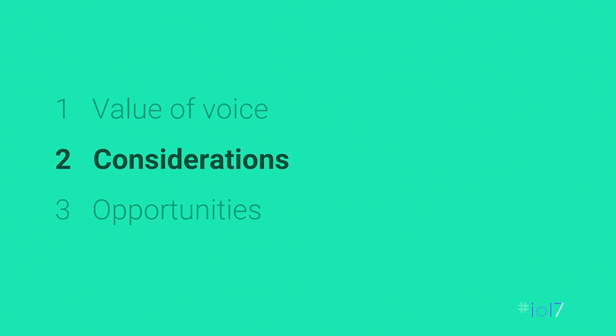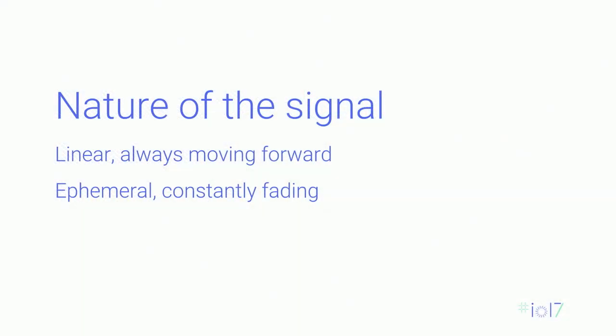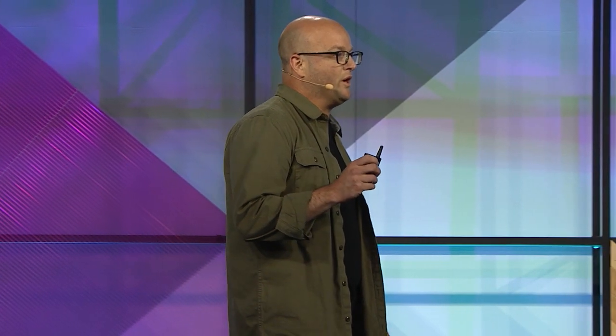Now let's talk through some considerations. The first thing I want to talk about is the nature of the signal. Voice is linear and it's always moving forward. It's ephemeral too, which means it's always fading behind you. It's like the critical elements of your mobile app disappearing almost as soon as they appeared — the back button, the hamburger menu just fading away, content appearing once and only for a fleeting moment. Those anchors are critical to visual and touch interfaces — they're persistent and available. With voice, we rely heavily on the user's knowledge of conversation and what they can recall.